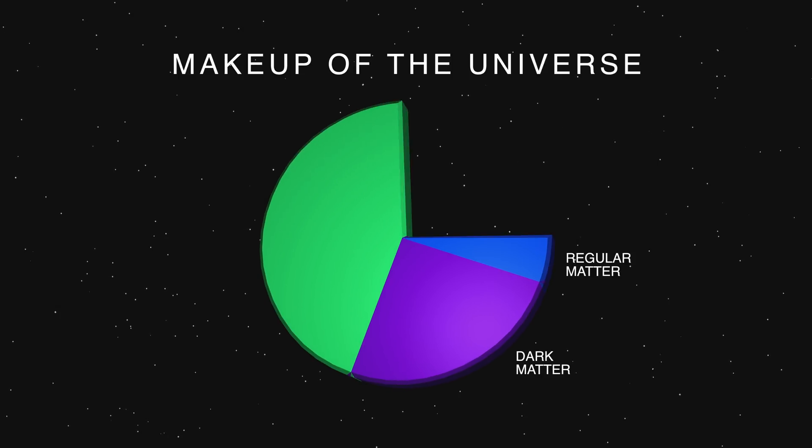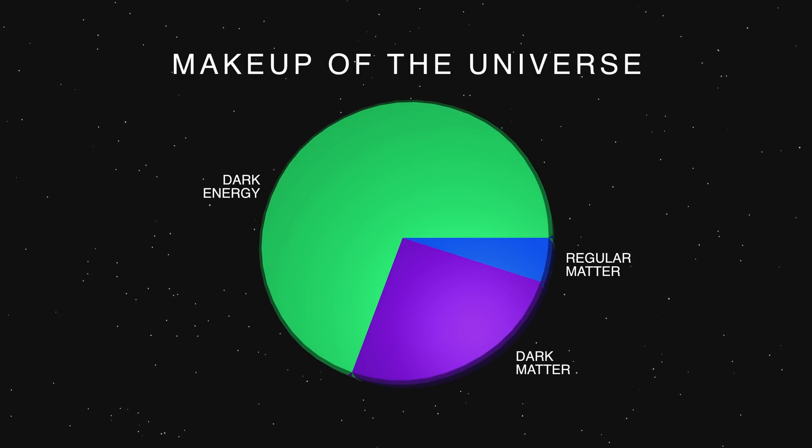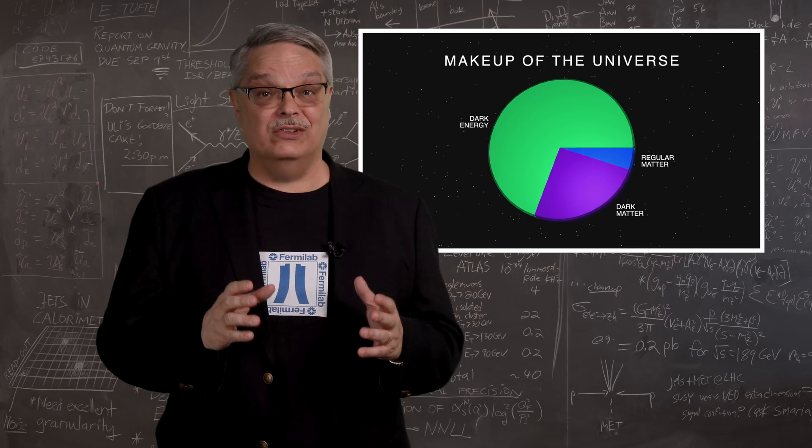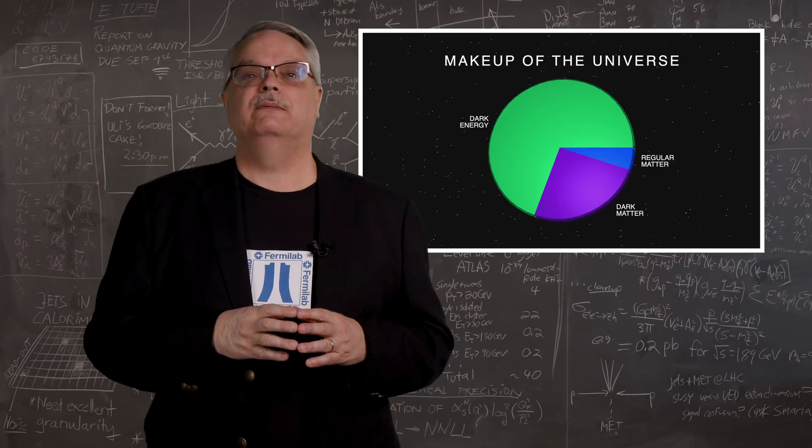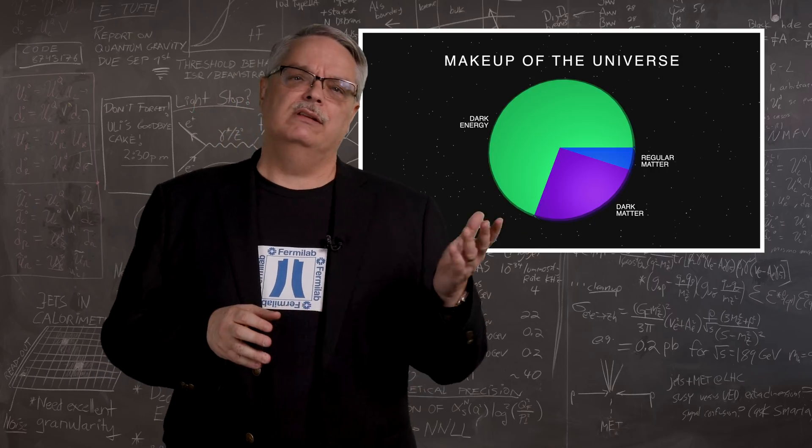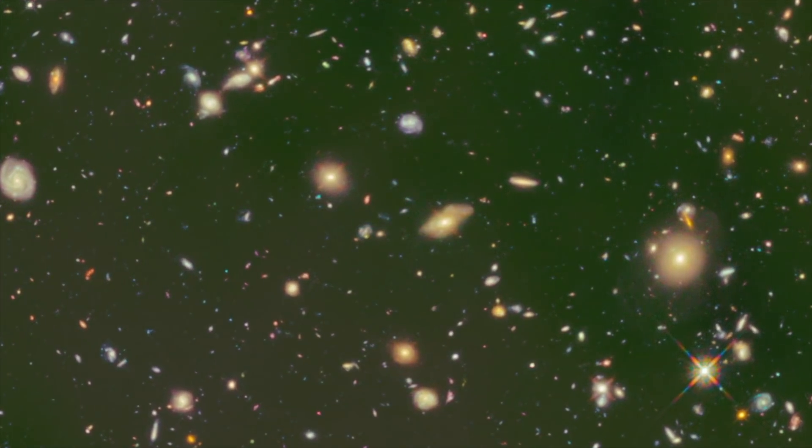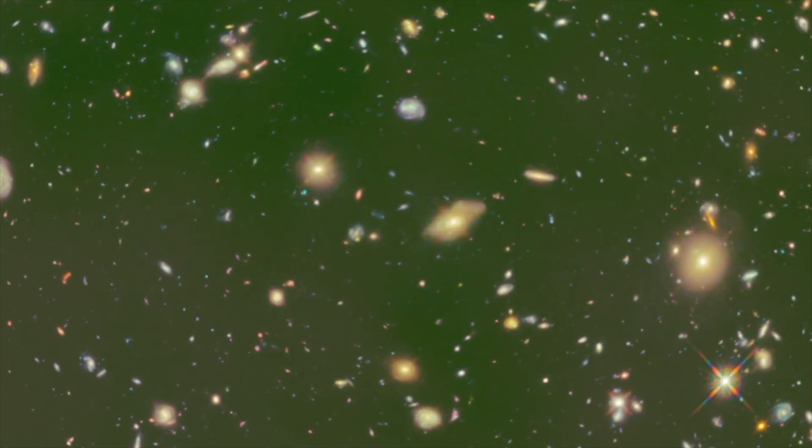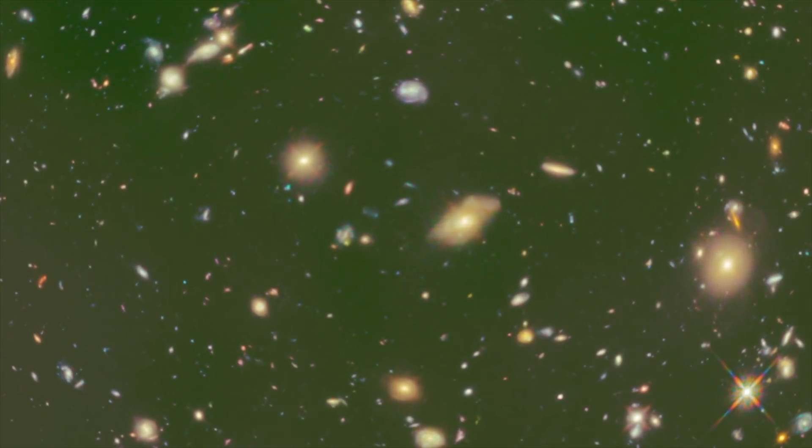The remaining 70% of the universe is thought to be made of a peculiar substance called dark energy, which is an energy field that results in a repulsive form of gravity. Unlike matter and dark matter, which makes the expansion of the universe from the Big Bang slow down, dark energy makes it speed up.